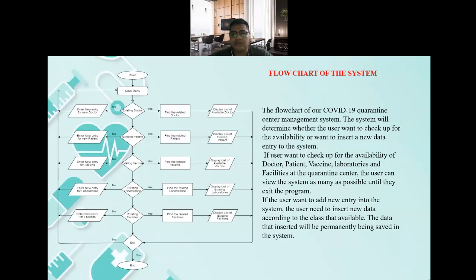The flowchart of our COVID-19 Quarantine Center Management System shows that the system will determine whether the user wants to check available information or insert new data entry into the system. If the user wants to check the availability of doctors, patients, vaccines, laboratories, and facilities at the quarantine center, they can view the system as many times as needed until they exit the program. If the user wants to add a new entry, they need to insert new data according to the available class, and the data inserted will be permanently saved in the system.